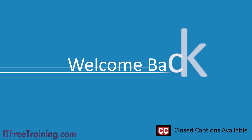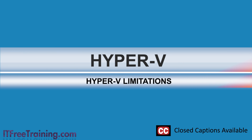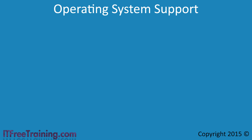In this video from ITFreeTraining, I will look at some of the limitations of Hyper-V. As you will see, these limits are quite high making Hyper-V a very scalable technology. In order to run Hyper-V, you need to first have a 64-bit OS. A 64-bit CPU is required and thus a 64-bit OS to go with it.